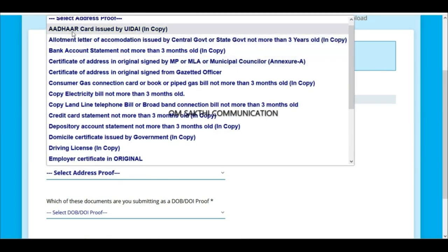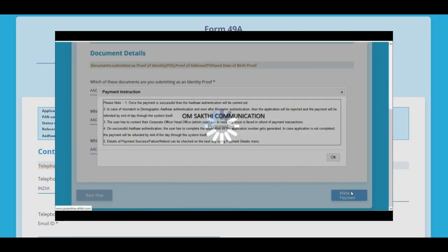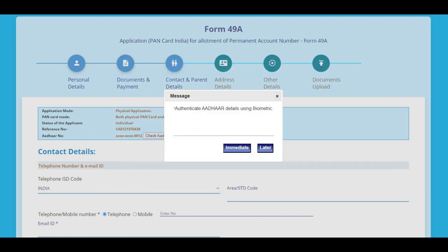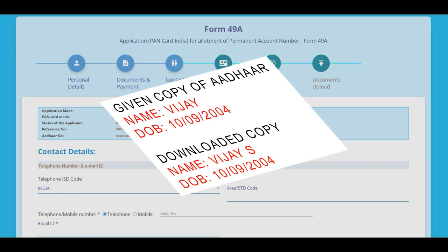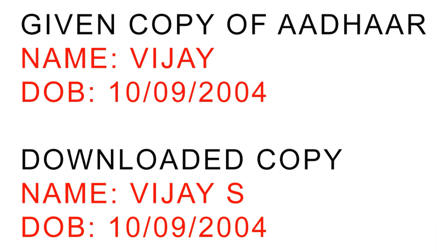If you want to download the Aadhaar card online and need to find a copy, let's give a copy — but there is a data mismatch. So you want to find a match when there is a data mismatch.